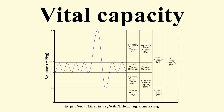Vital capacity increases with height and decreases with age. Formulas to estimate vital capacity are given where the approximate vital capacity is in cm³, age is in years, and height is in cm. Several studies have been made to measure and predict vital capacity. An online calculator exists that will compute the predicted vital capacity based on these references, given a patient's age, height, and sex.